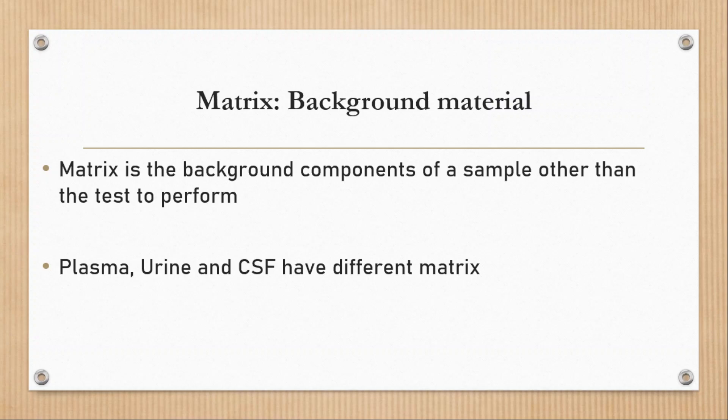Actually, matrix is background material of sample. Sample can be plasma, urine, CSF, and other body fluid. Matrix is background material of sample other than the test to perform. Different samples such as plasma, urine, and CSF have different matrix.